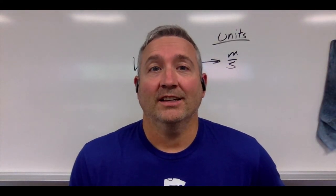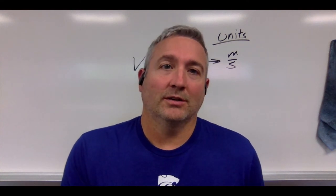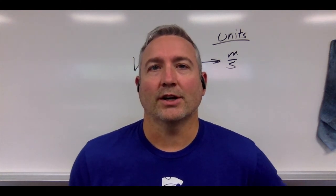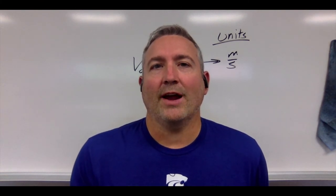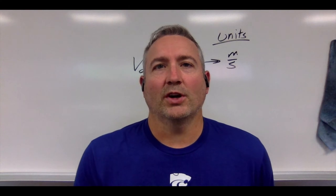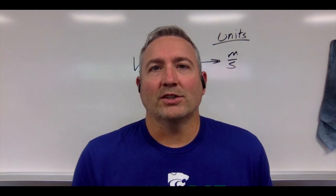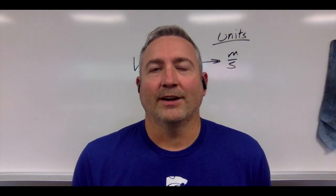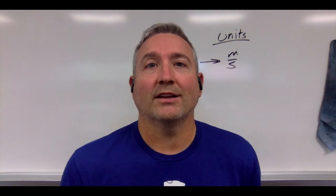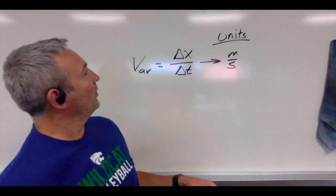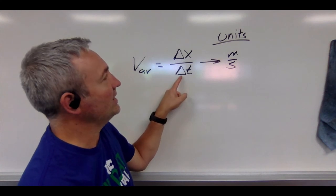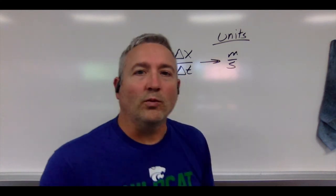I want to talk about velocity. We talked about position, displacement, and we mentioned speed and velocity. The difference is that velocity does include a direction, but now I want to talk about how we use graphing to represent motion. Now velocity is defined as the change in position over the change in time, so it's the rate that the displacement is changing. Average velocity is delta x — change in position over change in time — so it's measured in meters per second.